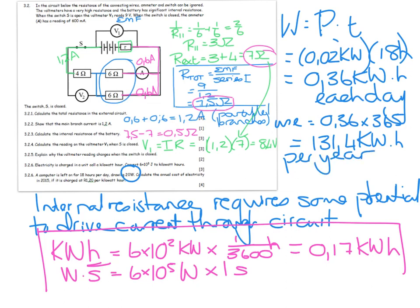So then I need to work out the cost. They tell me it's going to be 1.20 per kilowatt hour. The cost equals 131.4 kilowatt hours times 1.20, and I find I get 157.68. In other words, it costs you over 150 rand if you just leave your computer on all the time, which is a bit of a waste. You might as well switch it off when you're not using it.